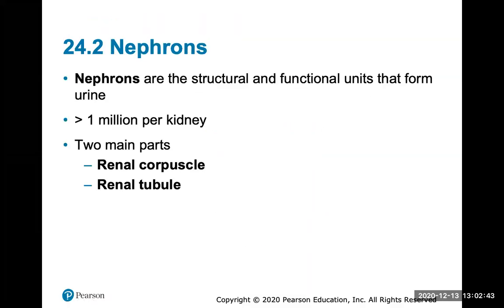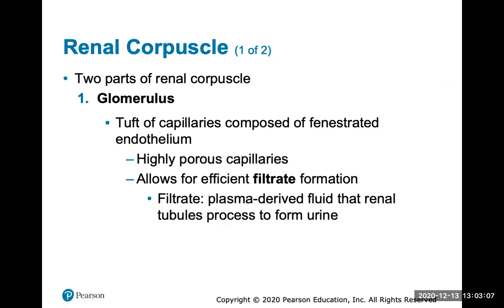The nephrons are the structural and functional units that form urine — there are about one million per kidney. There are two parts: the renal corpuscle, which contains the glomerulus as the first filtration component, and the renal tubule, where ions and electrolytes are either reabsorbed back into the bloodstream or secreted into the filtrate. The glomerulus is a tuft of capillaries composed of fenestrated endothelium with pores that allow efficient filtrate formation. Filtrate is the plasma-derived fluid that renal tubules process to form urine.